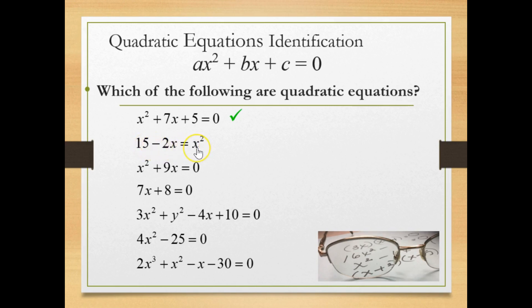Although this is not in standard form with everything variable-wise or constant on one side and 0 on the other, we have a single variable, and the highest power is x squared. For this example, it meets the criteria.